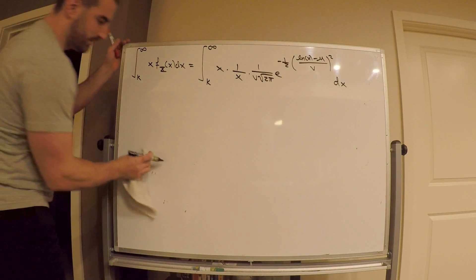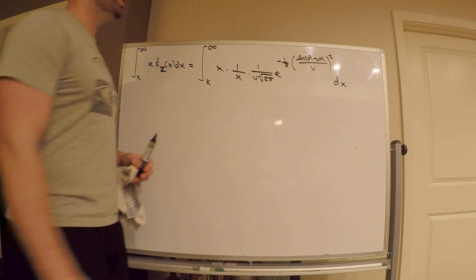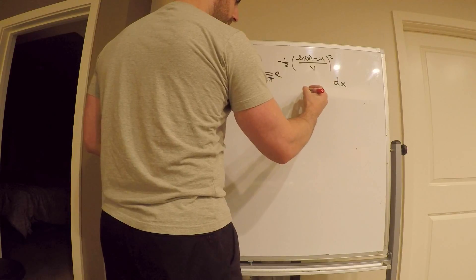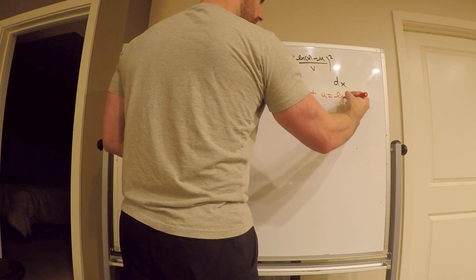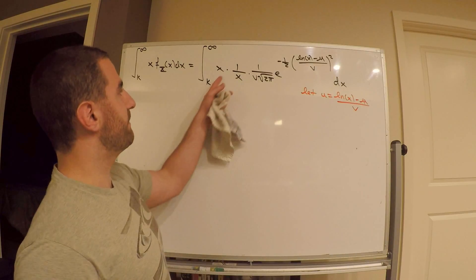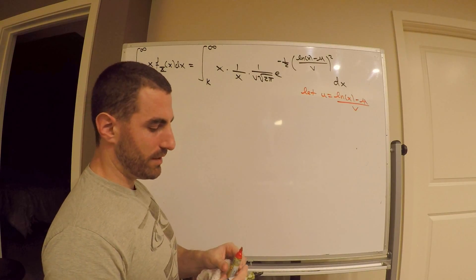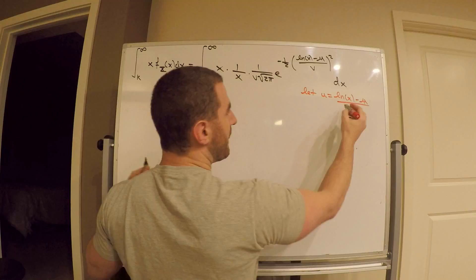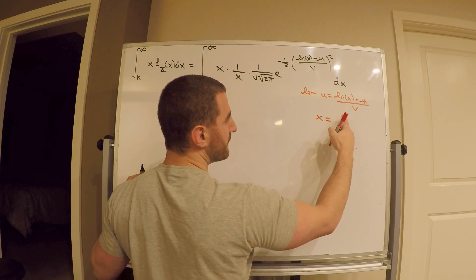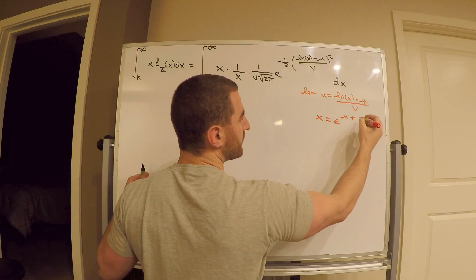What a nightmare as of right now. Let's make a substitution. What's the only natural u-substitution you can do? You'd let u be the argument of the exponential e. So we're going to let u equal ln x minus mu over v. We're going to end up needing to solve for x because I have an x inside the integrand. So x is equal to e to the mu plus v times u.